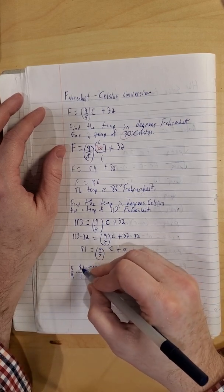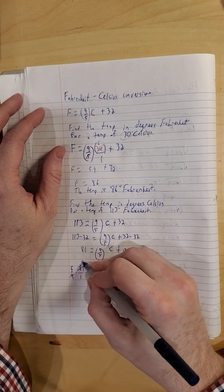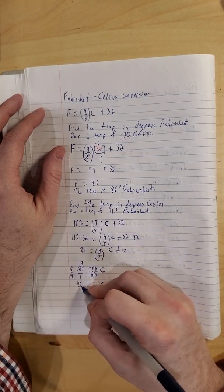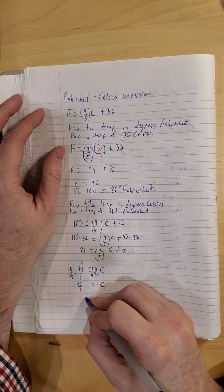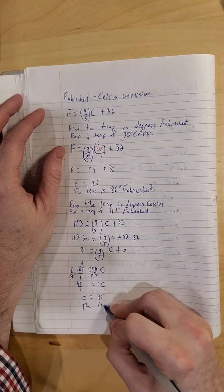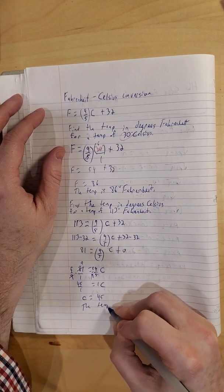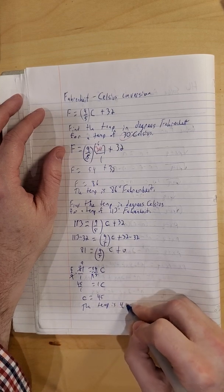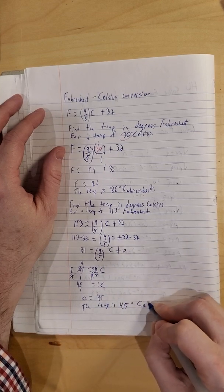So five-ninths is one, nine-ninths is one, so right hand side we have one C. Left hand side, 81 divided by nine is nine, five by nine is 45. So one time C is C, so C is 45. So the temperature is 45 degrees, this time in Celsius.